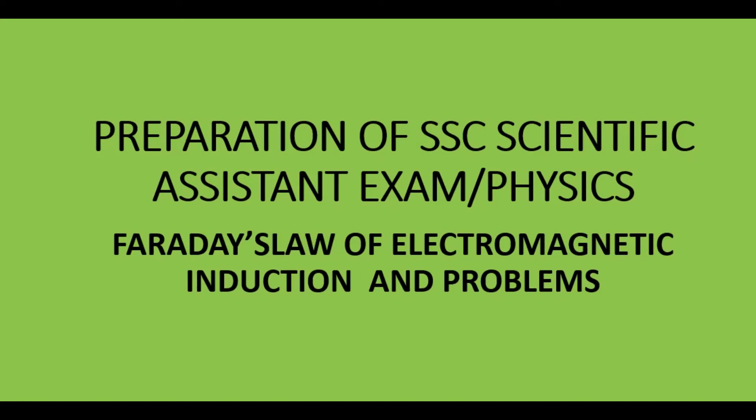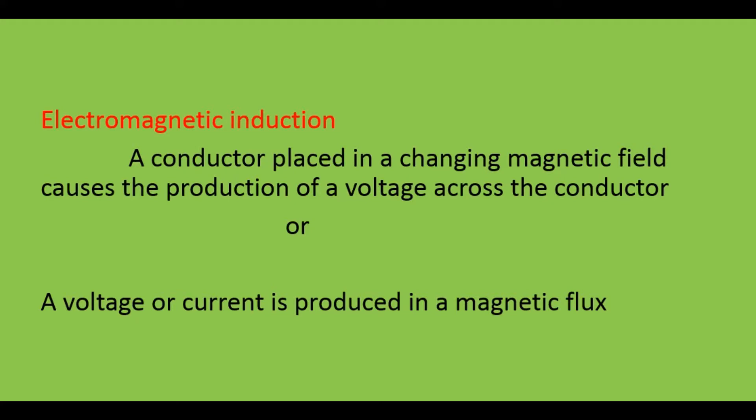Hi friends, in this video we see about Faraday's law of electromagnetic induction and its problems. First we see what is electromagnetic induction. A conductor placed in a changing magnetic field causes the production of a voltage across the conductor. A conductor moving through a stationary magnetic field produces voltage or current. The magnetic field induces the electric current or voltage — that is called electromagnetic induction.